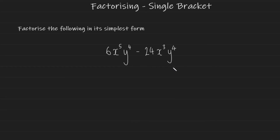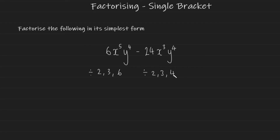For our final example, if you're proficient with your times tables you can see straight away that the highest common factor for the numbers is 6: I can divide 6 by 6 to get 1, and 24 by 6 since 24 is in the 6 times tables. If you didn't spot it straight away, you can break it into factors: for 6, divide by 2, 3, or 6; for 24, divide by 2, 3, 4, 6, 8. Once you know the highest factor in the left term is 6, there's no need to go past 6 for the right term.